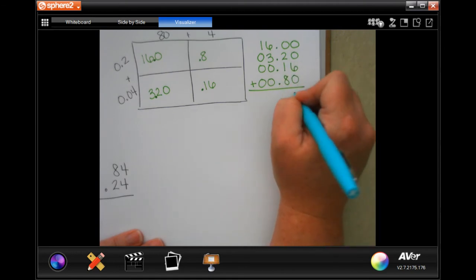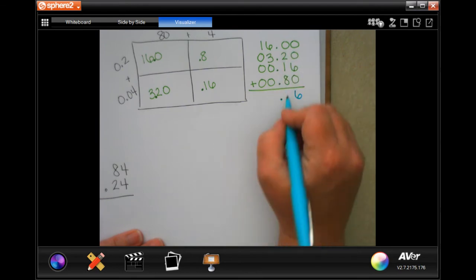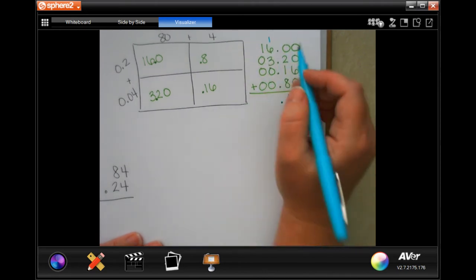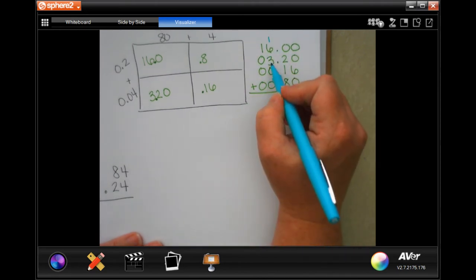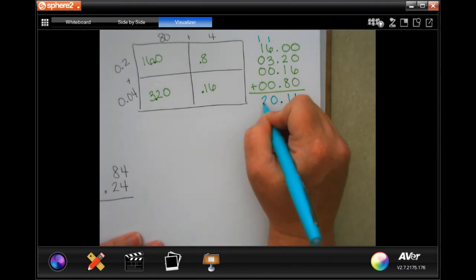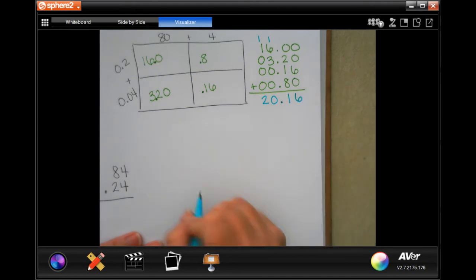Now 0s and a 6, so it's going to be 6. 2 plus 1 is 3 plus 8 is going to be 11. Carry a 1. 1 plus 6 is 7 plus 3 is 10. 0 down. Carry a 1. 1 plus 1 is 2. So your answer is going to be 20.16.